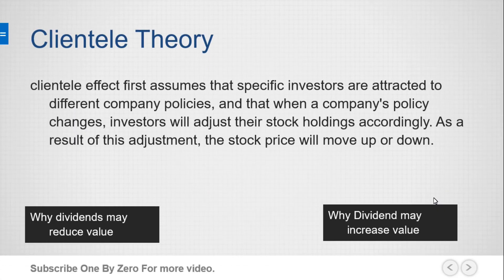The clientele effect theory first assumes that specific investors are attracted to clientele theory policies. When a company changes its policy, investors will adjust their stock holdings accordingly in the following year. As a result of this adjustment, the stock price will move up or down.